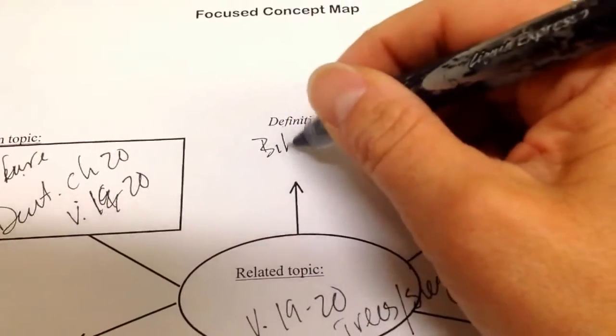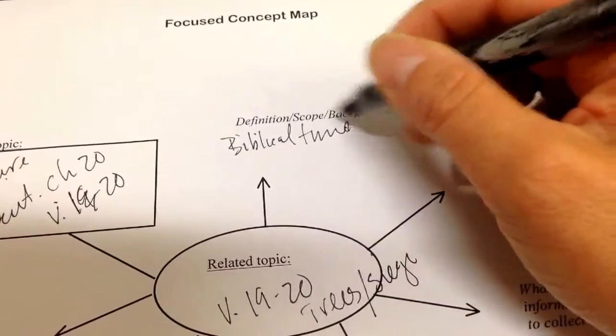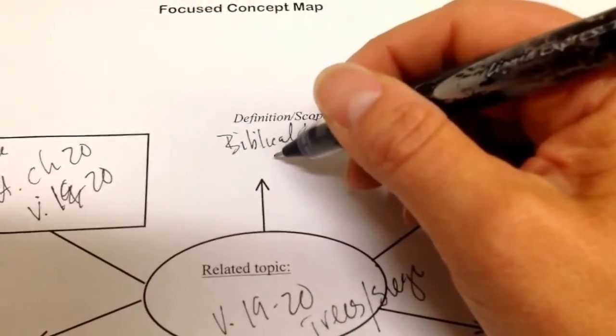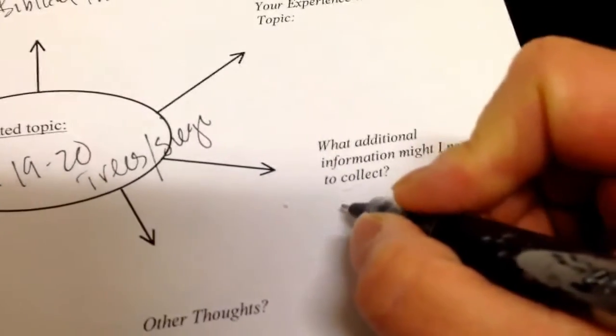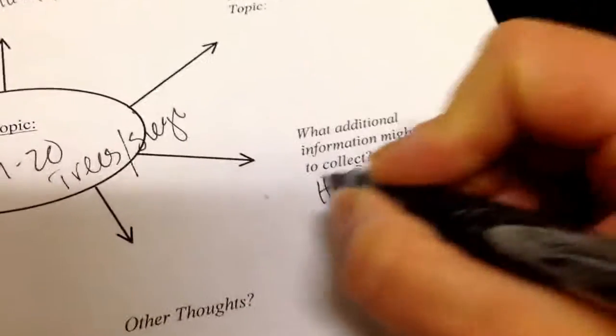So I'm looking at biblical time. So that's definitely happening in what's Israel now, Palestine. So what additional information might I need to collect? I might want to look at some maps, some historical maps. So I might want to do that.